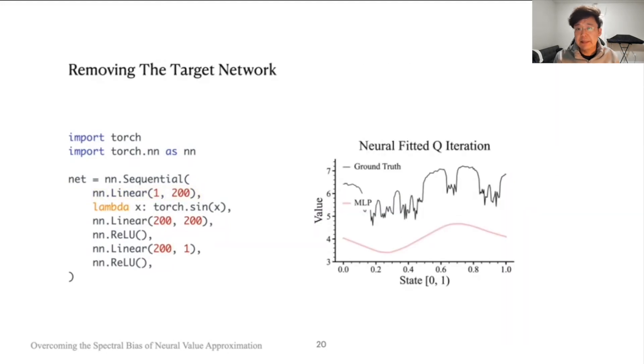Improved off-policy stability also allows us to remove the target network, which removes a residual offset between the orange baseline here and the blue baseline, which is our method.